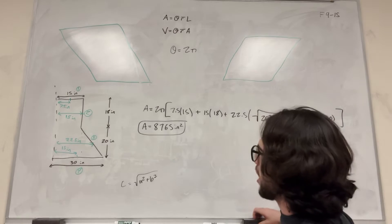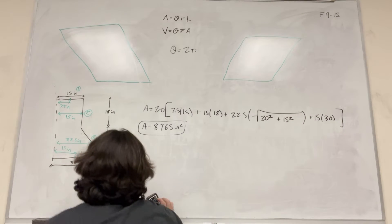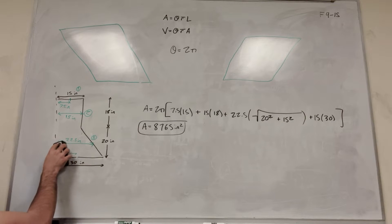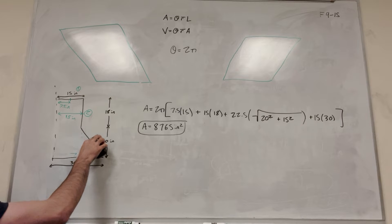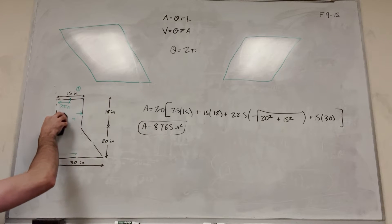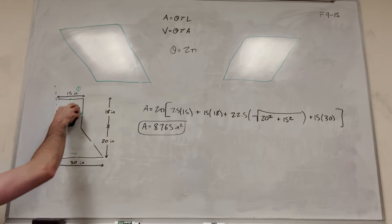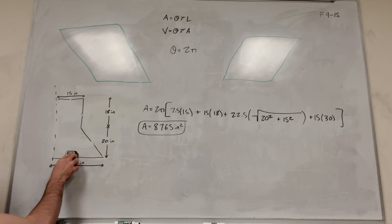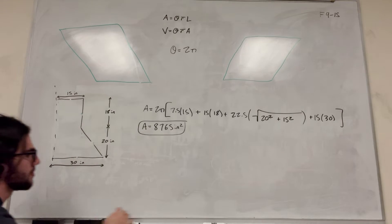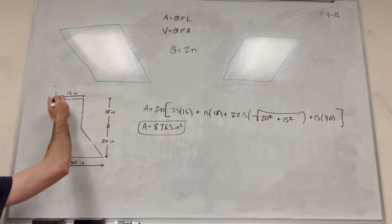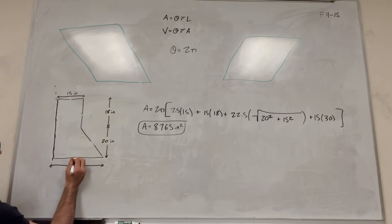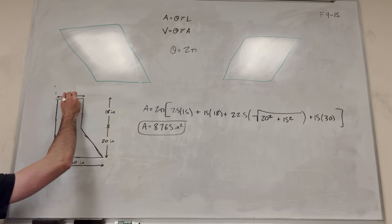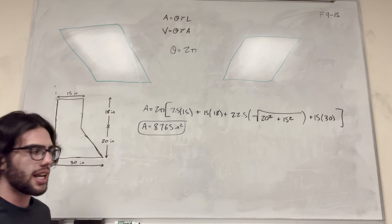Alright, so we finished part one. Now let's go ahead and do part two — finding the volume. We're going to use the volume formula this time. The r̄ now becomes the distance to the center of mass of each sub-shape, and we multiply it by the area of that shape. We want to break this complex shape into simpler ones, so the simplest breakdown is a triangle and a rectangle.